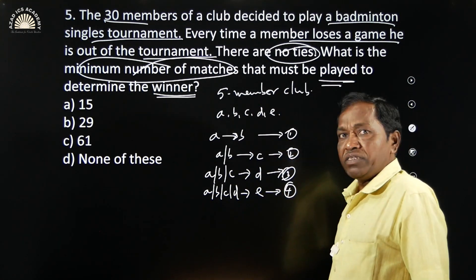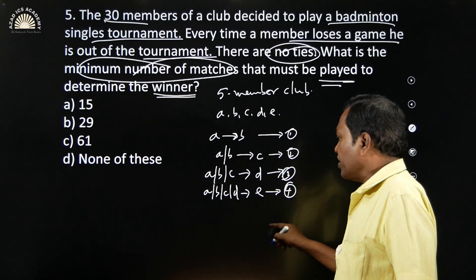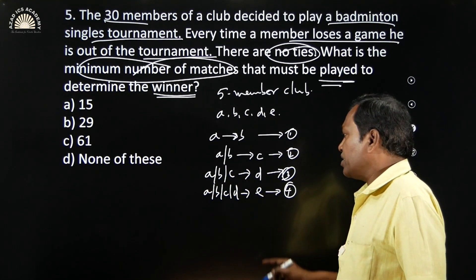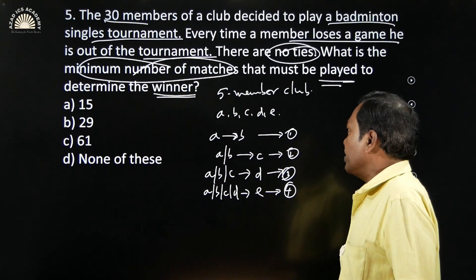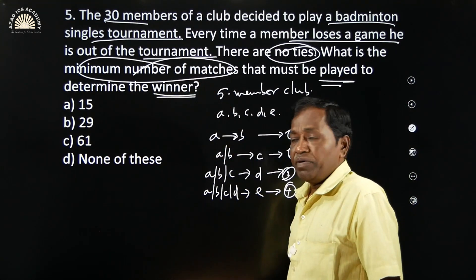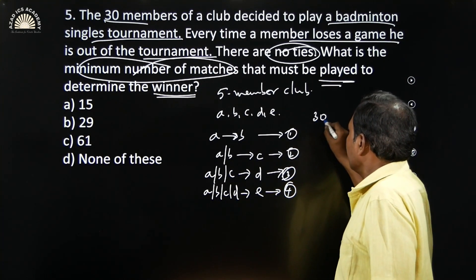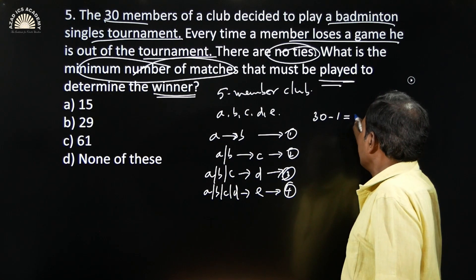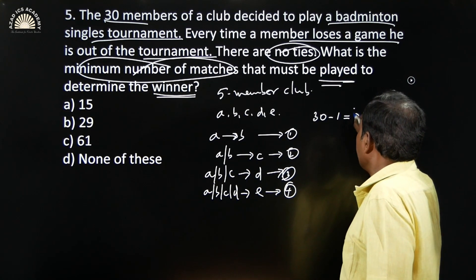Five members means four matches. If there are six members, F also plays, making five matches. So how many members are there? 30 members. Then 30 minus 1 is 29 — so 29 matches will be played.